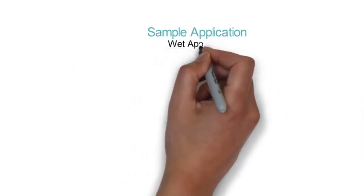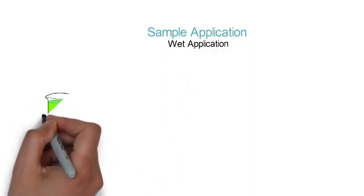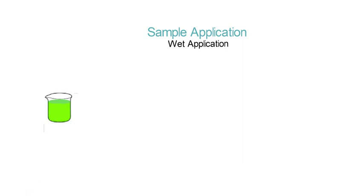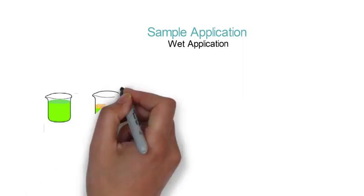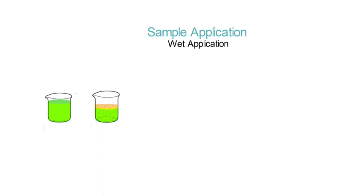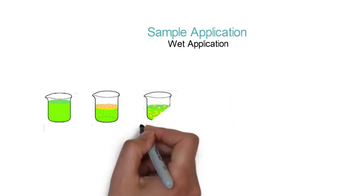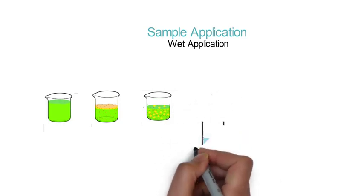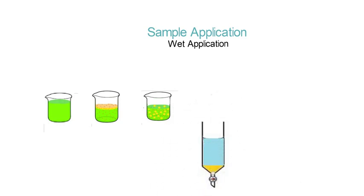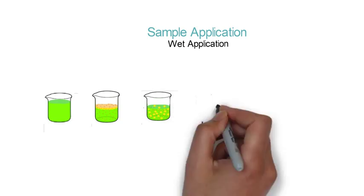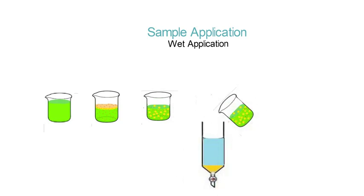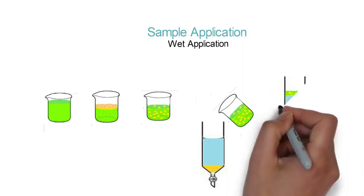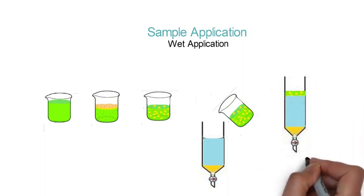Third part is sample application. There are two methods: wet application and dry application. In wet application, take fresh solvent in a beaker. After that, add the compound which is to be separated and mix it thoroughly. After that, put a small portion at the top of the column. Now the column is ready for elution.